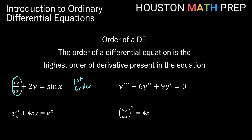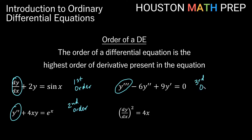If we look at the next one — y'' + 4xy = e^x — the only derivative term is y double prime, which is a second order derivative, so this is a second order differential equation. Looking at y''' − 6y'' + 9y' = 0, there are many derivative terms, but the highest order present is the third order derivative, making this a third order differential equation. And for (dy/dx)² = 4x — a little tricky — this isn't the second derivative; we just have the first derivative squared. Since the square is just an operation on that first derivative, this is actually a first order differential equation.